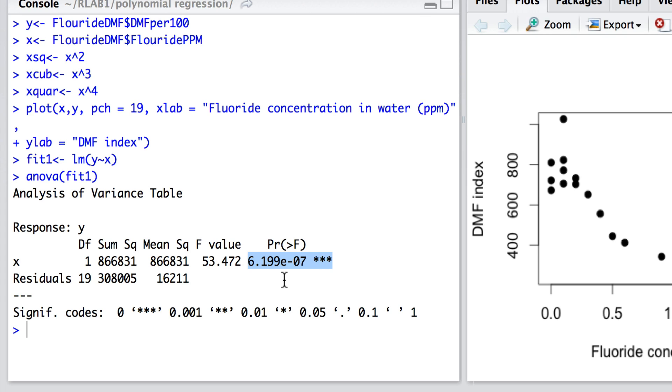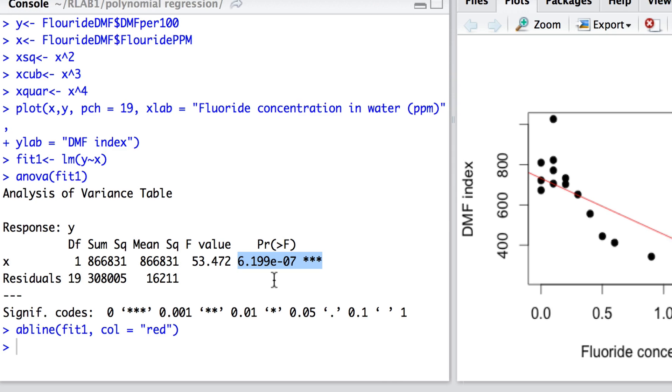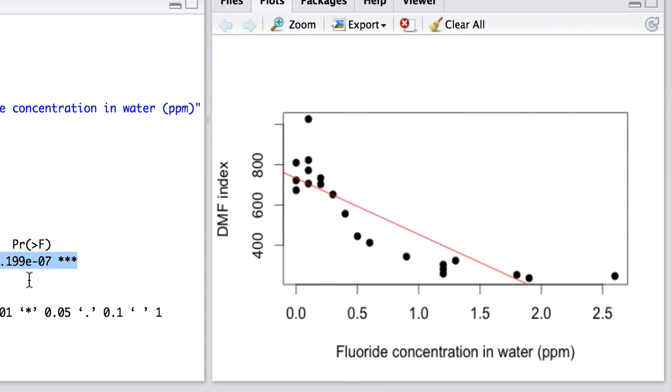Now we can fit that model that we have actually calculated and estimated back onto the graph by simply using the ABLINE command here. And this is what I'm doing here, and we'll see that the fitted model now appears on the graph. So this is what we've done here.